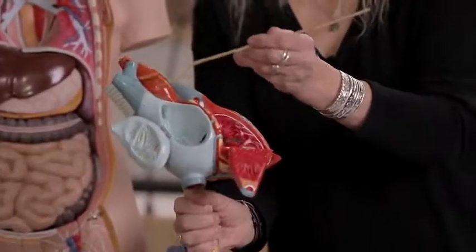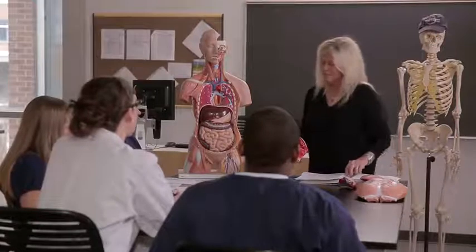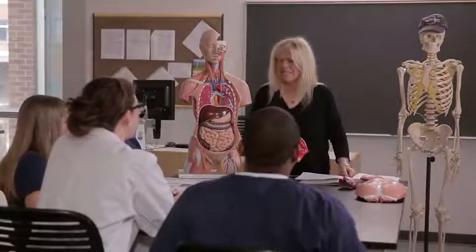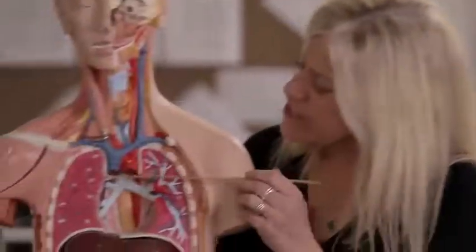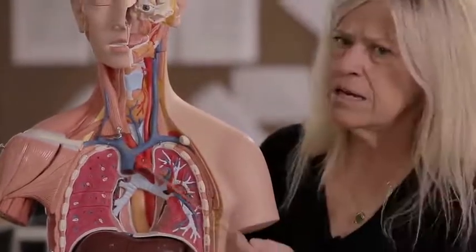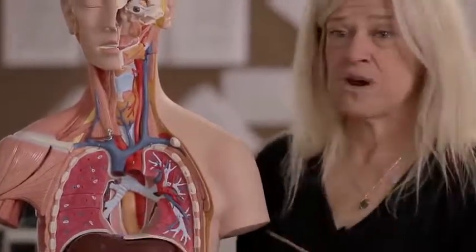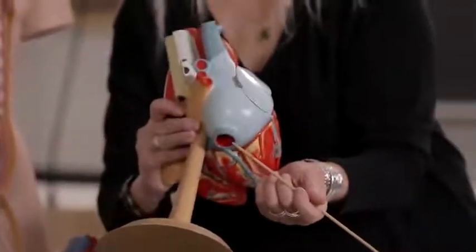We have three vessels carrying deoxygenated blood back to the right atrium. The first is the superior vena cava. Student Greg: it returns blood from the upper extremities and every area above the heart. Excellent — so the superior vena cava carries blood from the head, neck, and upper extremities back to the right atrium.